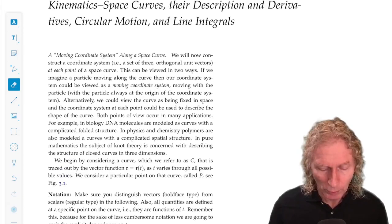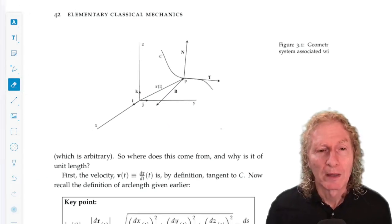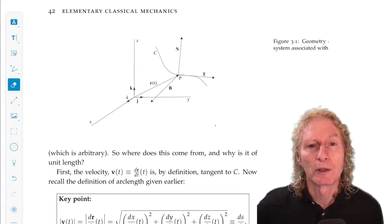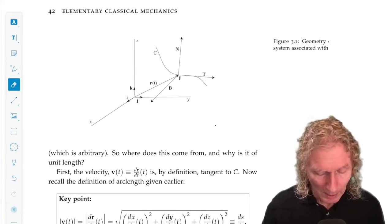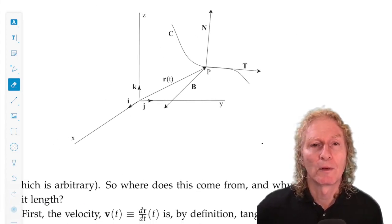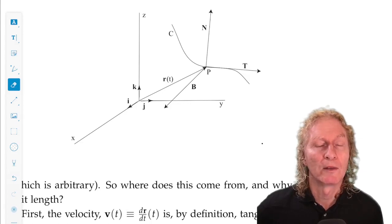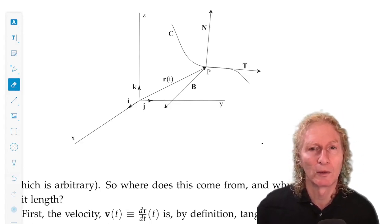So what we're going to do, recall the picture of a space curve that we had, that is a vector-valued function of a scalar variable we'll call t. r(t), we think of r as the position vector emanating from the origin, and as it moves in time, we think of t as time, it traces out a curve. That's our space curve.